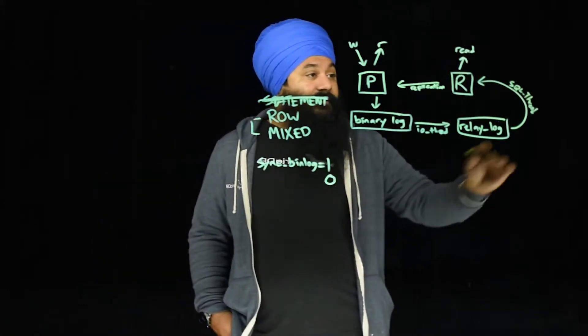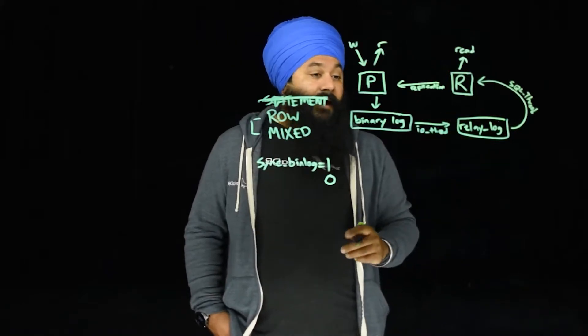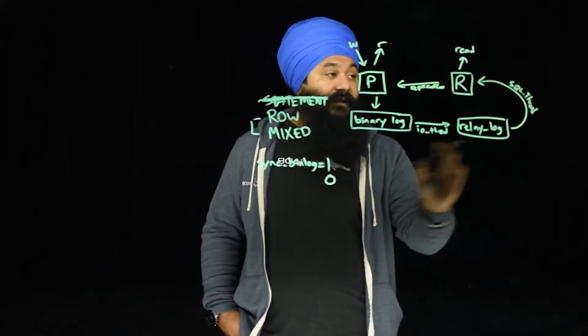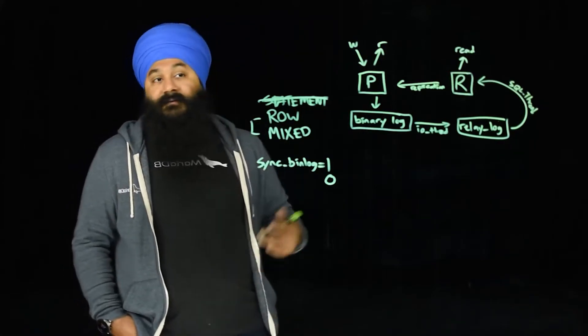And so basically, this is how the replication flows from the primary to the replica via the relay log using the IO thread and the SQL thread. So that's the basics.